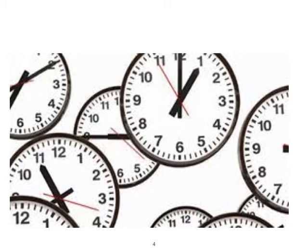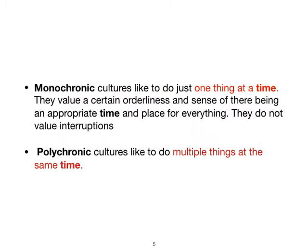In simple terms, monochronic cultures like to do one thing at a time. They value a certain orderliness and a sense of there being an appropriate time and place for everything. They do not value interruptions. Opposite to that are polychronic cultures, where people like to do multiple things at a time.